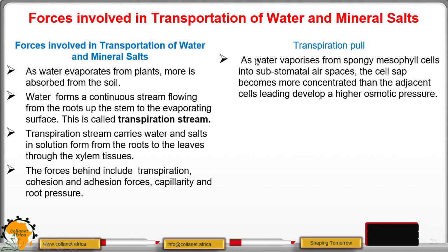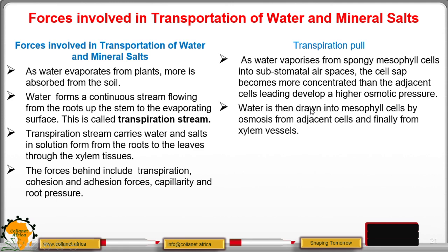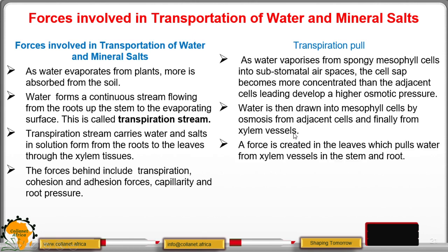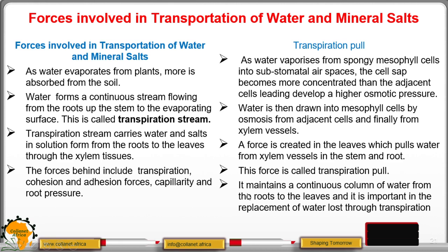The forces involved include transpiration pull, cohesion and adhesion forces, capillarity, and root pressure. Transpiration pull: as water vaporizes from the spongy mesophyll cells into the substomatal air spaces, the cell sap becomes more concentrated than the adjacent cells, leading to development of higher osmotic pressure. Water is drawn into the mesophyll cells by osmosis from adjacent cells and finally from the xylem vessels. This creates a force that pulls water from the xylem vessels up through the stem and roots to the leaf, maintaining a continuous column of water.